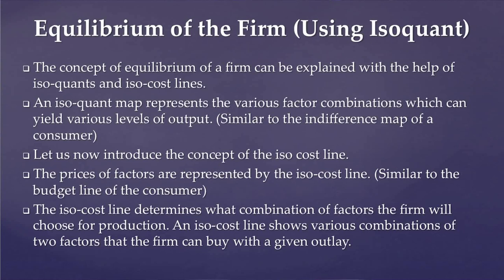Now let us introduce the concept of the isocost line. The prices of factors are represented by the isocost line. This is again similar to the budget line of the consumer we have already come across while discussing the consumer behavior units. The isocost line determines what combination of factors the firm will choose for production. An isocost line shows various combinations of two factors that the firm can buy with a given outlay. The concept of isocost lines has been explained with the help of figure 7.10.